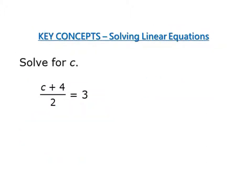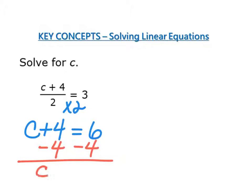When you have an equation with a number in the denominator, we have to get rid of that first. We get rid of it by multiplying both sides times that number. So I'm going to multiply both sides times 2, and I end up with c plus 4 equals 6. I now have to subtract 4 from both sides. I do it to both sides to keep it balanced. And I'm left with c equals 2.